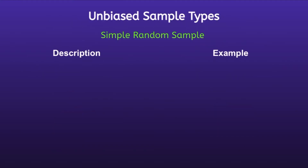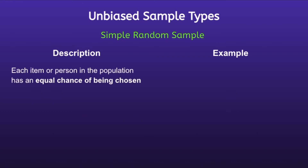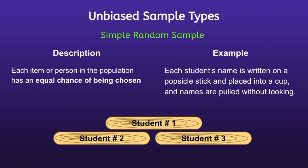Unbiased sample types. Simple random sample: each item or person is selected such that every person in the population has an equal chance of being chosen. For example, each student's name is written on a popsicle stick and placed into a cup, and names are pulled without looking. This is a simple random sample because each student has an equal chance of being chosen.